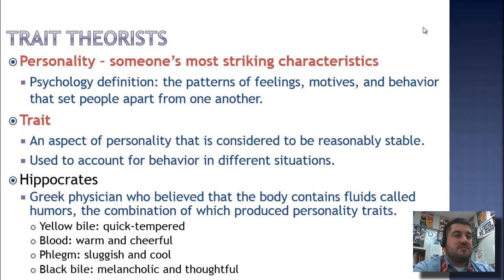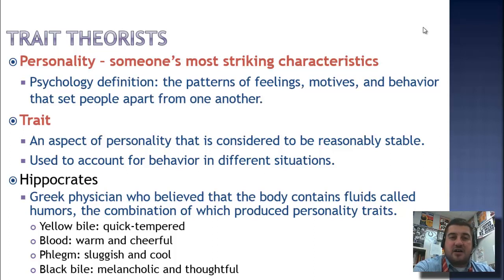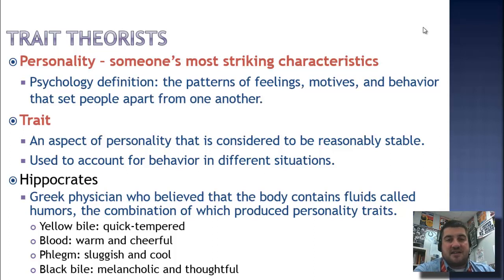Happy, sad, depressed, angry, frustrated, short, tall, honest, upstanding — all can be traits. There are tens of thousands of traits in the English language.